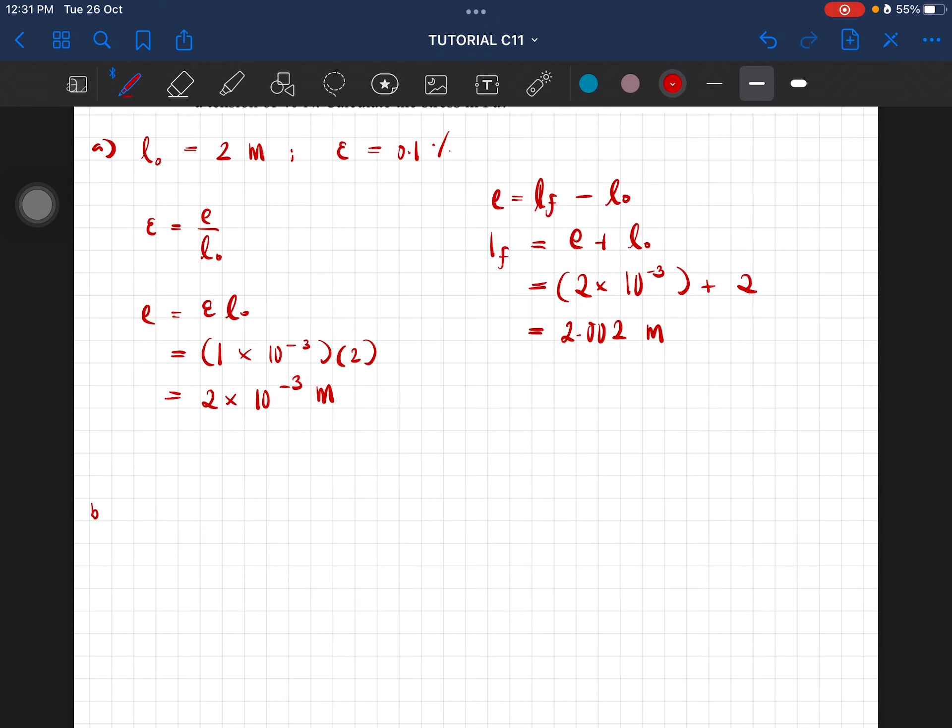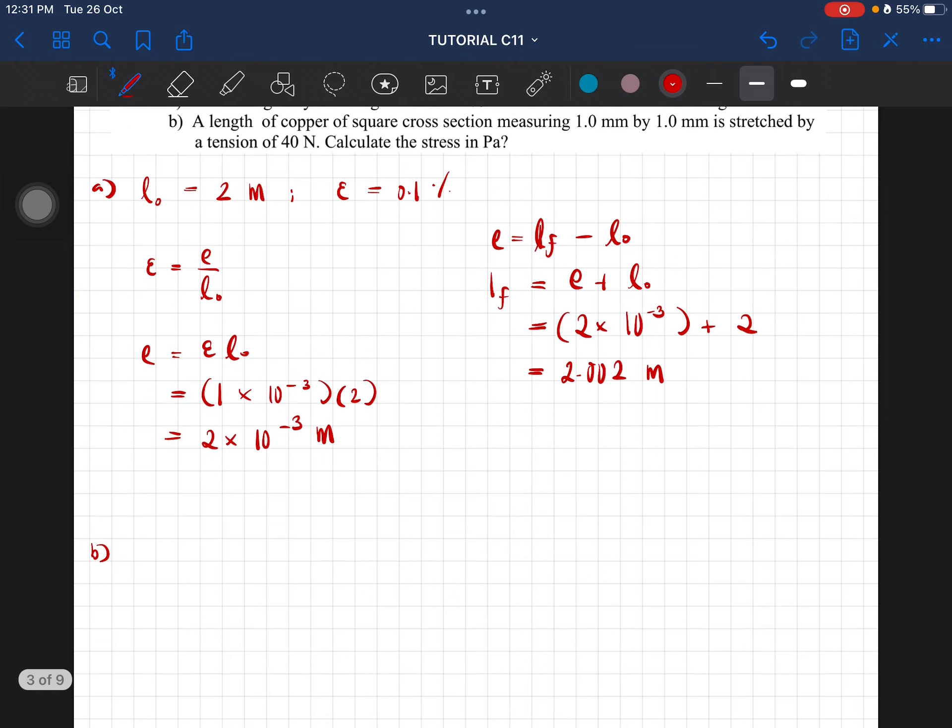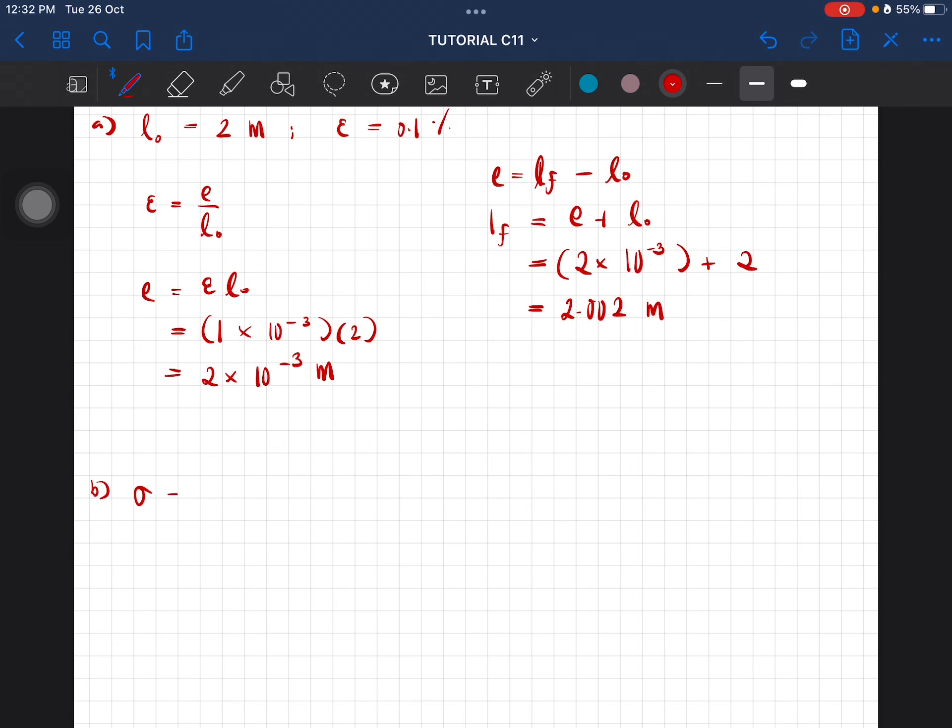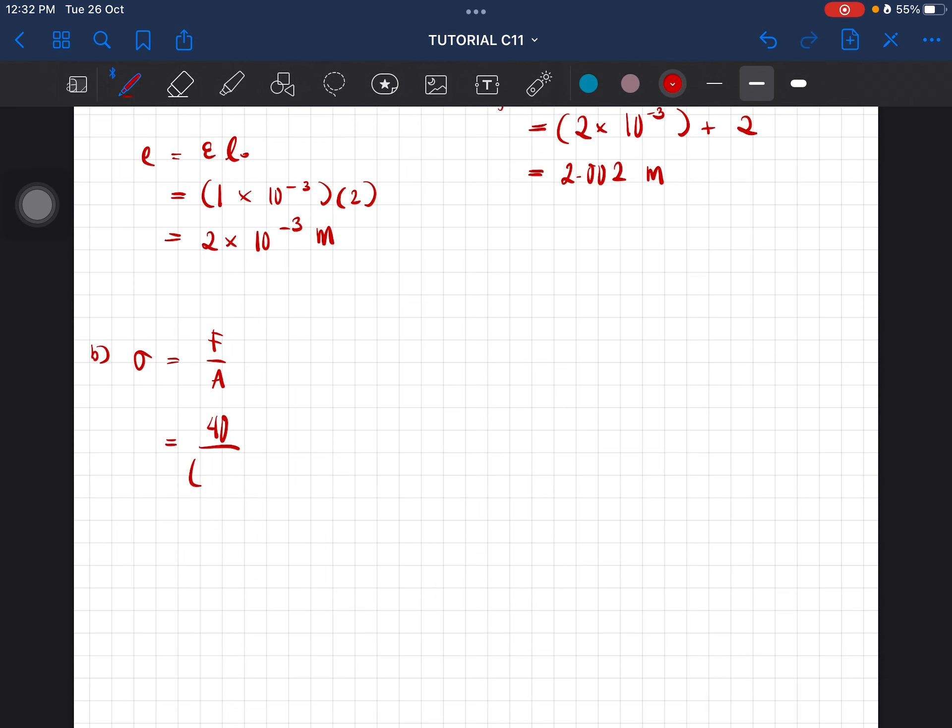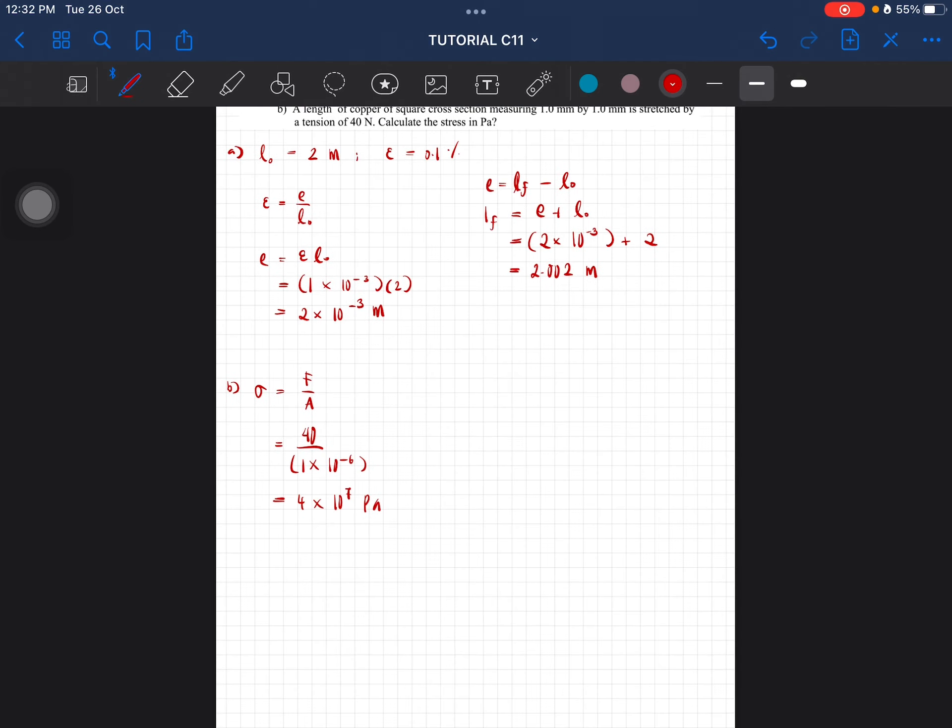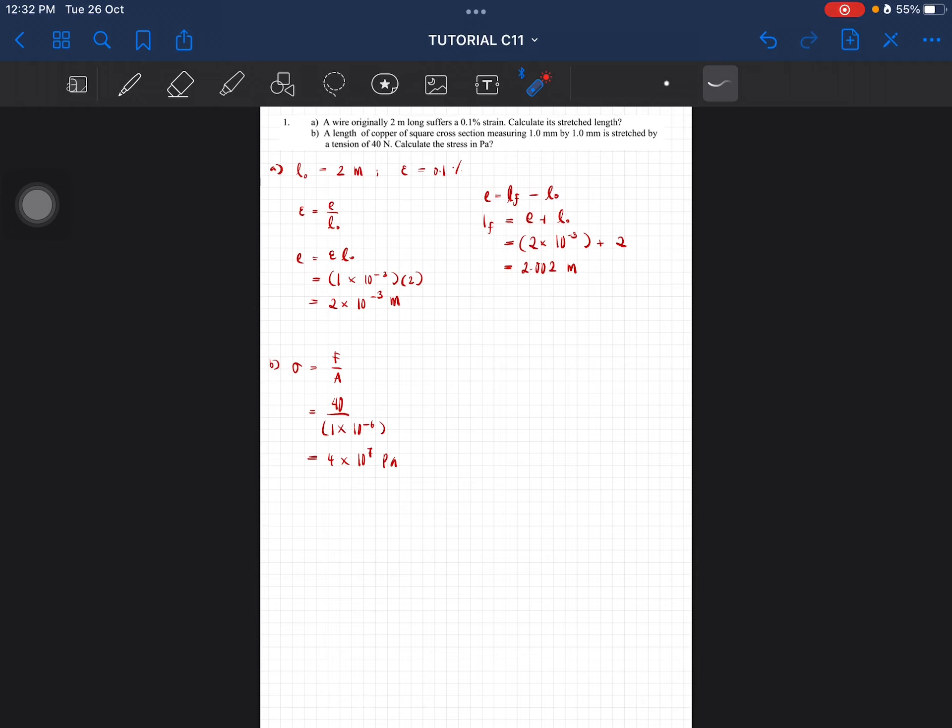Stress σ = F/A, where force is 40N and area is 1mm × 1mm = 1×10⁻⁶ m². This equals 4×10⁷ Pascal. That is the solution for question number one.